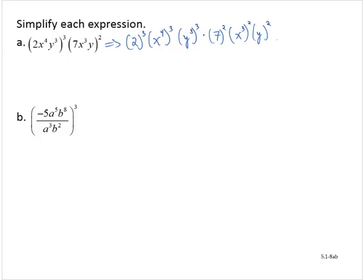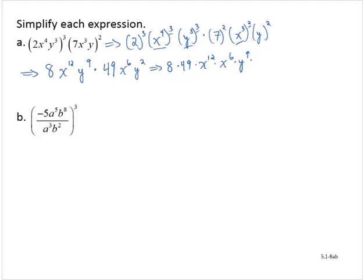Now I'm going to clean this up. 2 to the third is 8. For x to the fourth to the third — when I raise a power to a power, I multiply the exponents — so that's x to the 12th. Similarly, y to the third to the third is y to the ninth. 7 squared is 49. x to the third to the second is x to the sixth. y to the second. Rearranging: 8 times 49 times x to the 12th times x to the sixth times y to the ninth times y to the second.